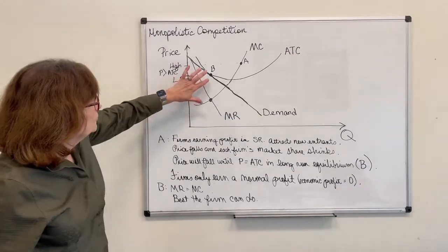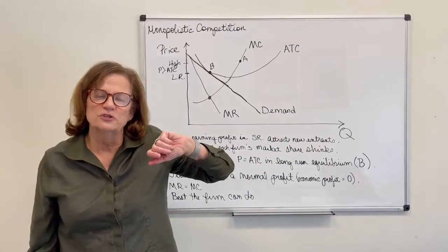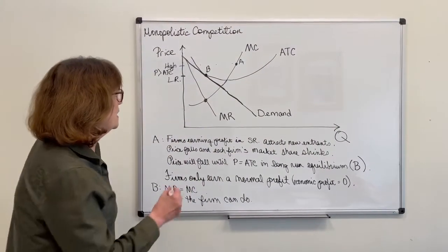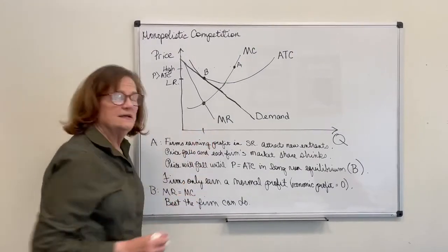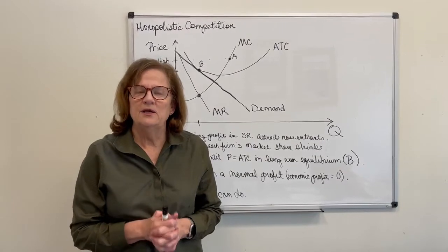But you will also see in long run equilibrium the firm is producing where marginal revenue equals marginal cost, and that's the profit maximizing level of quantity and the firm cannot do any better by producing anywhere else.